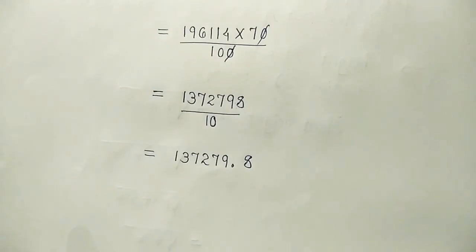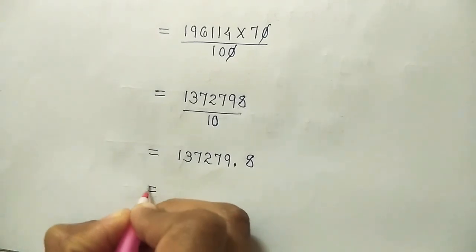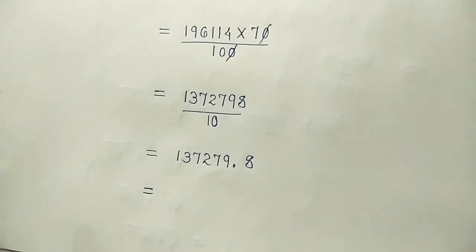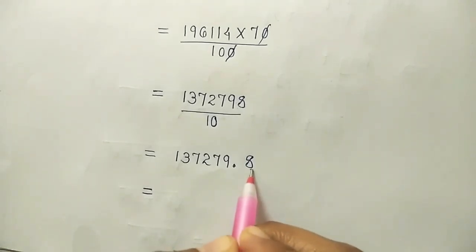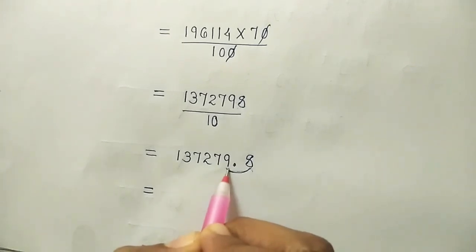Now as this is cost, so here we'll put whole number. We'll not put it in decimal form. Because it is cost. This is 8. After decimal point it is bigger than 5. Right. So what we'll do? We'll add 1 digit here. Plus 1 here.